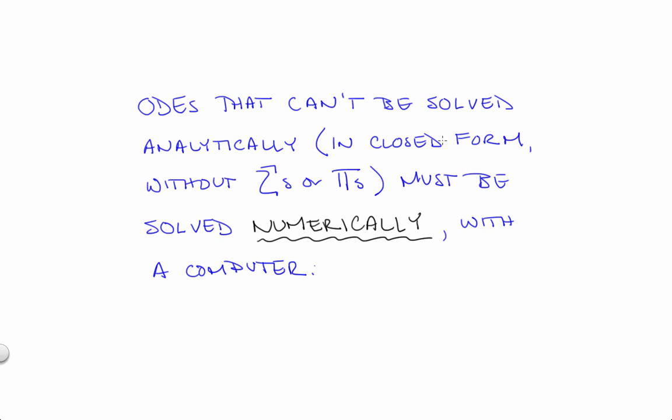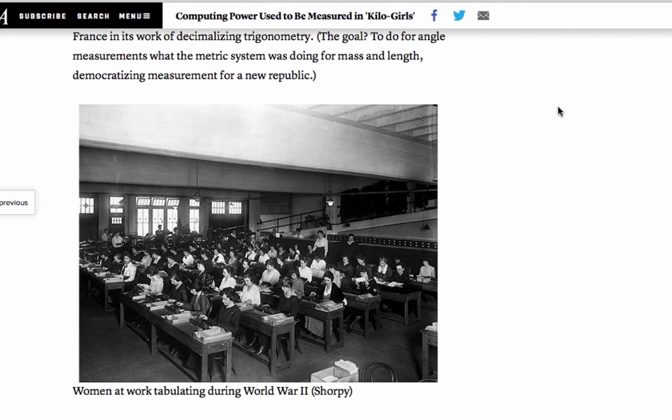Now, stepping back just a bit brings up an interesting issue. How the heck did anyone do any of this stuff before there were computers? The answer is, not very much and quite painfully. Indeed, the word computer was the name for the low-level staff, women mostly, who carried out the mind-numbing sequences of arithmetic operations that were involved in solving the ODEs that mattered in World War II.